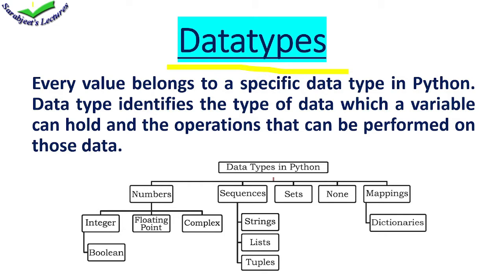We will learn about data types in Python. Every value belongs to a specific data type in Python, and the data type identifies the type of data which a variable can hold and the operations that can be performed on that data. In Python we can store values that can be a number, a sequence, a set, a mapping value, and we also have a special data type which is None. I will execute and show you how many data types we will use.